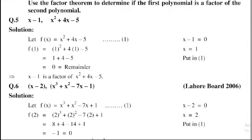Question number 5: x minus 1, and x² plus 4x minus 5. So first of all, let's suppose f(x) equals x² plus 4x minus 5, that is equation number 1. Since x minus 1 equals 0, this implies that x is equal to 1. Put in equation 1.